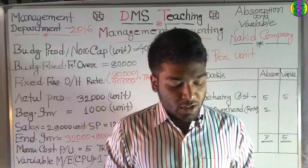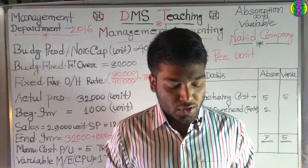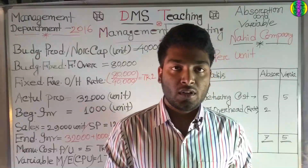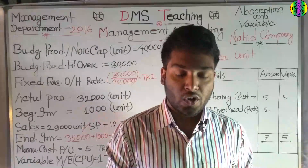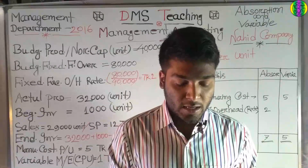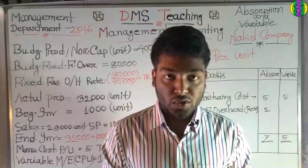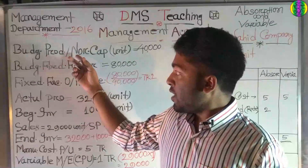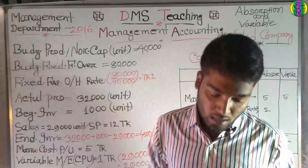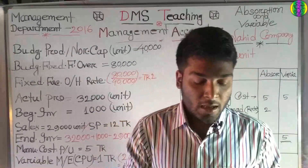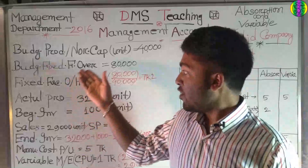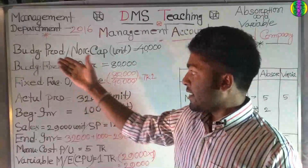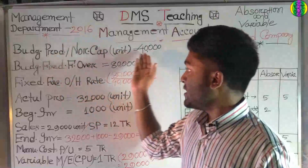An examination of the company's records has produced the following information. First of all, I am going to show you the budgeted production unit and the normal capacity. I am going to show you the budgeted fixed factory overhead of $8,000. Then I will show you the budgeted production unit again as part of the given data.